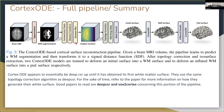They create an implicit surface, do segmentation, then do topology correction after the Gaussian blur step. Then they use marching cubes — an isosurface extraction method where they walk around the implicit surface at a constant value of zero and extract the surface — giving them the white matter surface. The ODE portion of this paper begins after they get the white matter surface and deform it to pial.